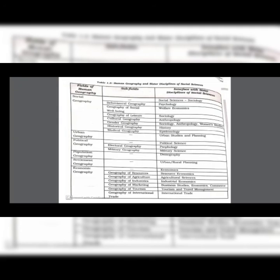The interface — meaning the supporting disciplines — for behavioural geography and its sub-fields include sociology, psychology, welfare economics, history, epidemiology, and women's studies. Further fields of human geography include urban geography, political geography, economic geography, and settlement geography. Their sub-fields include military geography, geography of resources, geography of agriculture, geography of marketing, and tourism geography. The supporting interface disciplines include resource economics, agricultural geography, and industrial geography.